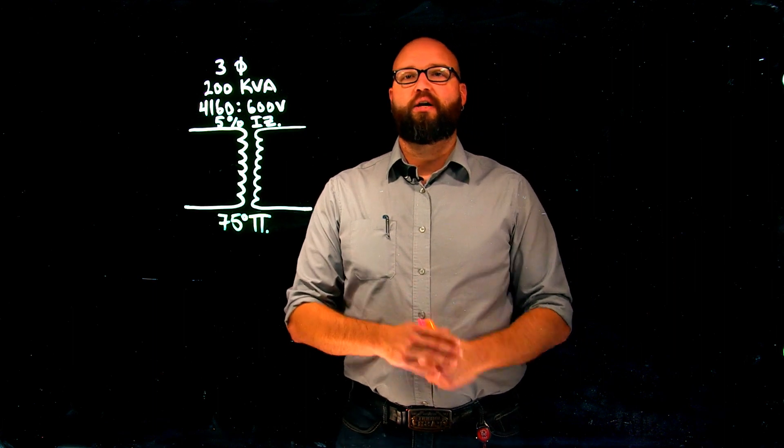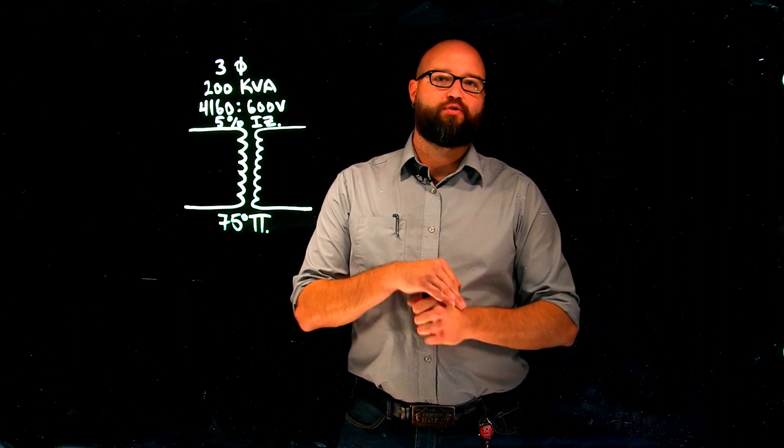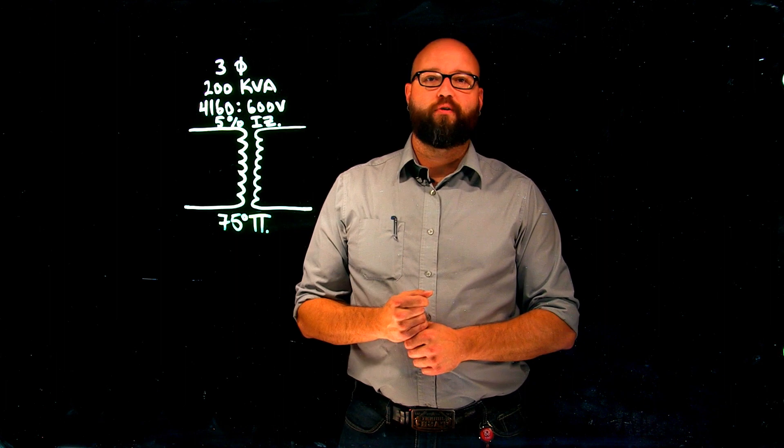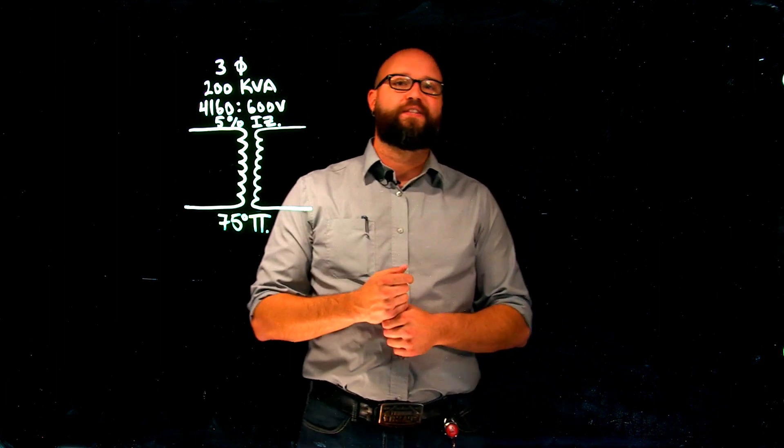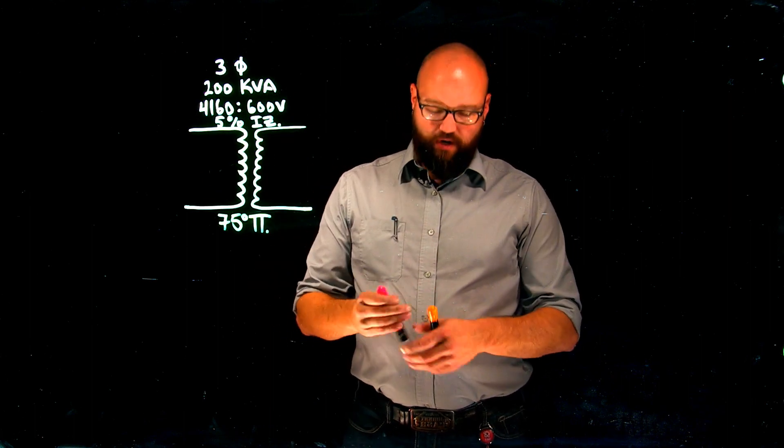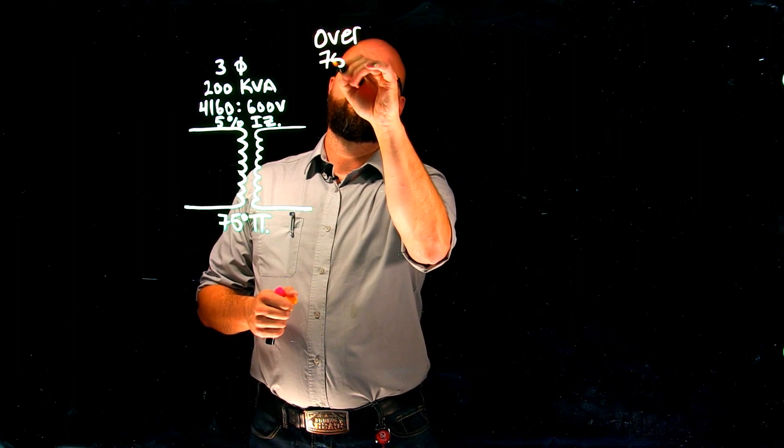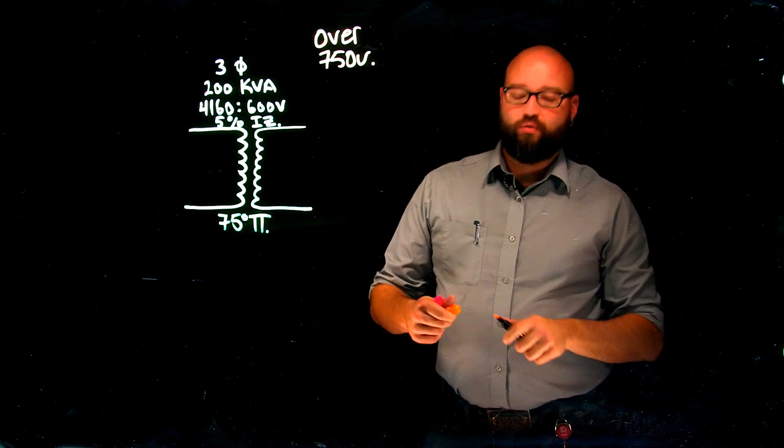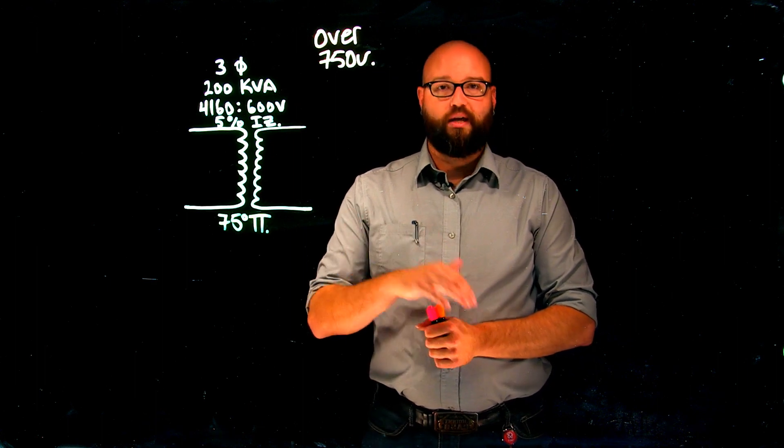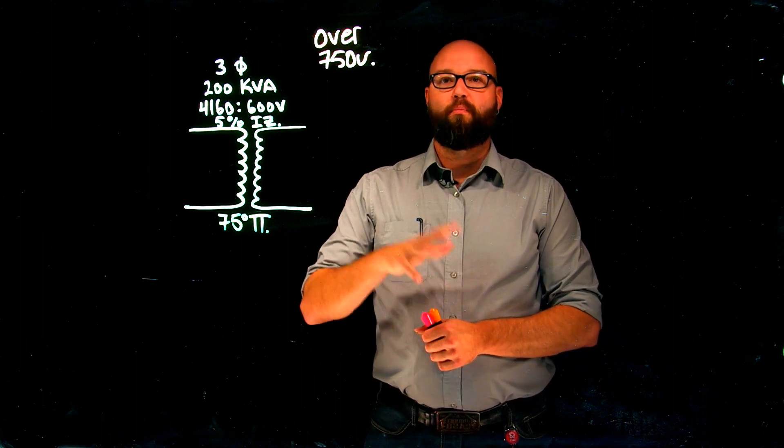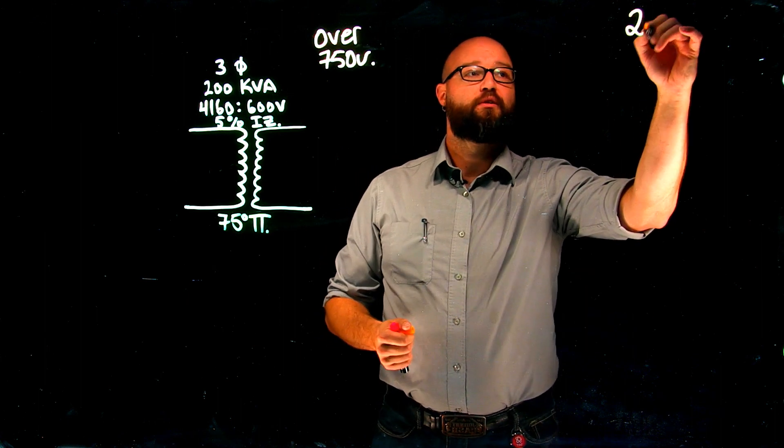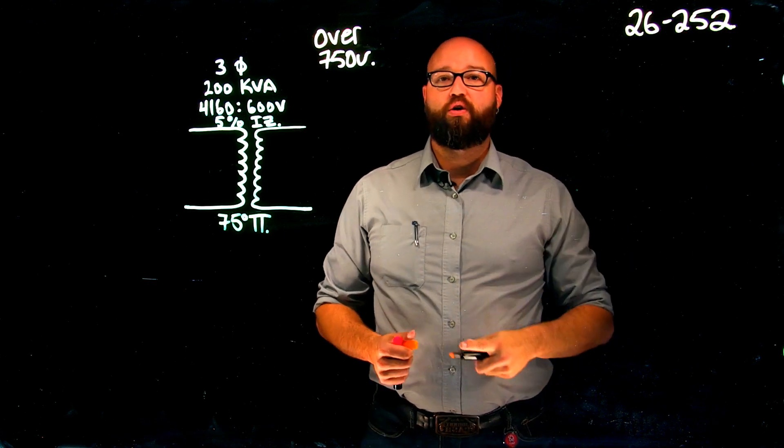In this series of videos, we are going to take a look at determining overcurrent devices for different transformer installations. This will be a four-part series that covers all the general rules for calculating transformer overcurrent devices in the 23rd edition of the 2015 Canadian Electrical Code. The first that we're going to start with here is our over 750 volt transformer on the primary. This does not matter whether it's a dry type or liquid filled. This applies to both. So anything over 750 volts, we're going to be dealing with 26-252 as our code rule for reference.